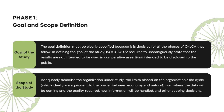The next step is to define what is going to be analyzed and how — that is the scope. In an OLCA study, the scope should be unique and sufficiently well-defined to ensure that the breadth, depth, and detail of the study are compatible and sufficient to address the stated goals. Practitioners should adequately describe the organization under study, the limits placed on the organization's life cycle, where the data will be coming from and the quality required, how information will be handled, and other scoping decisions.